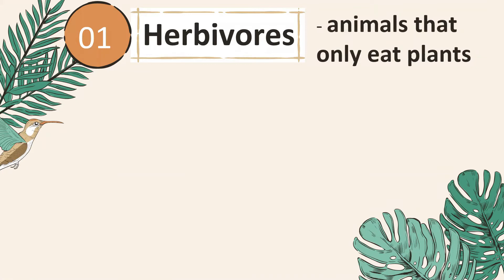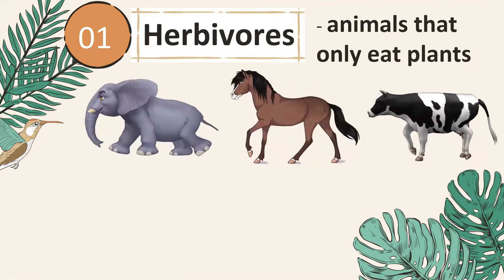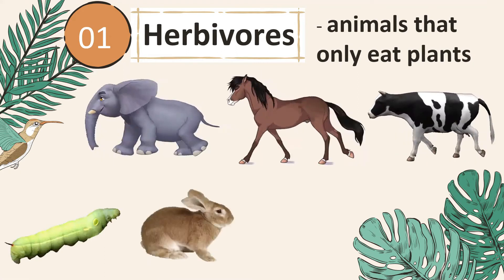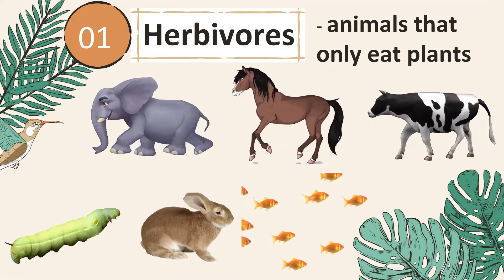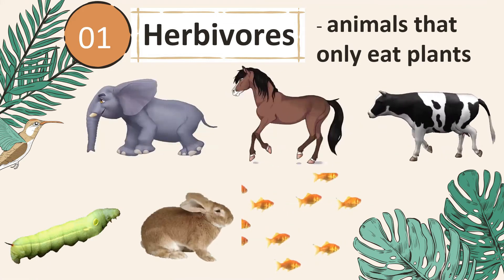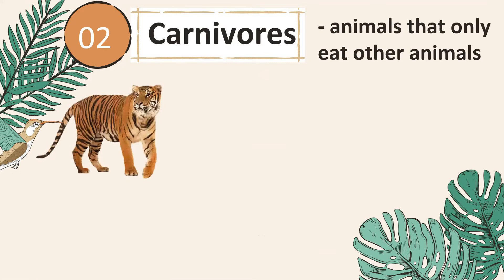Herbivores are animals that eat plants only. Examples include elephants, horses, cows, caterpillars, rabbits, and small fishes. Carnivores, on the other hand, are animals that only eat other animals.